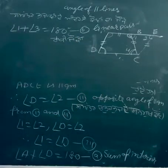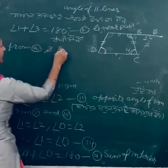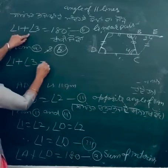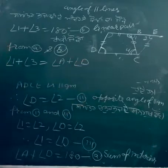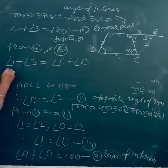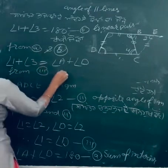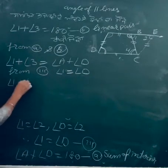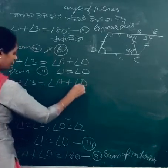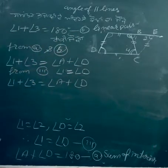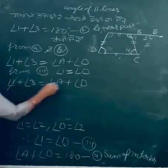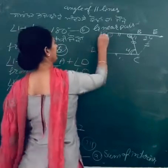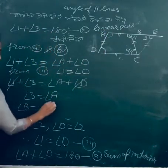From A and B, both equal 180 degrees: angle 1 plus angle 3 equal angle A plus angle D. From equation 3, angle 1 equal angle D. So angle 3 equal angle A. Angle 3 is angle B. Therefore angle A equal angle B. Hence proved.